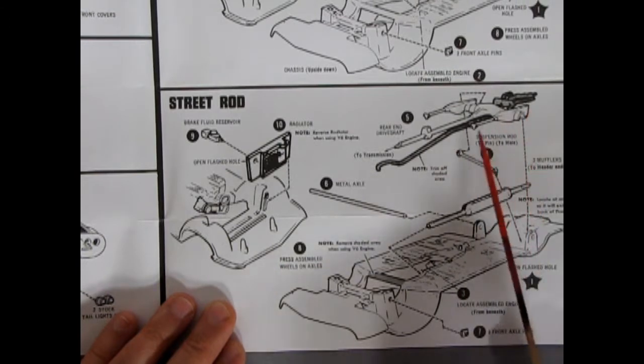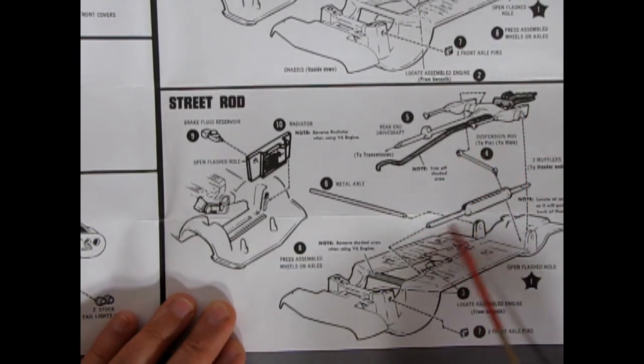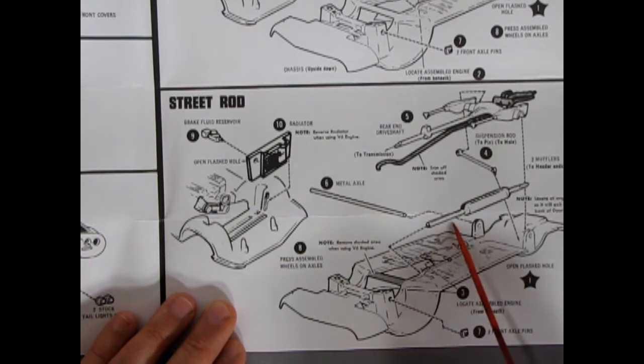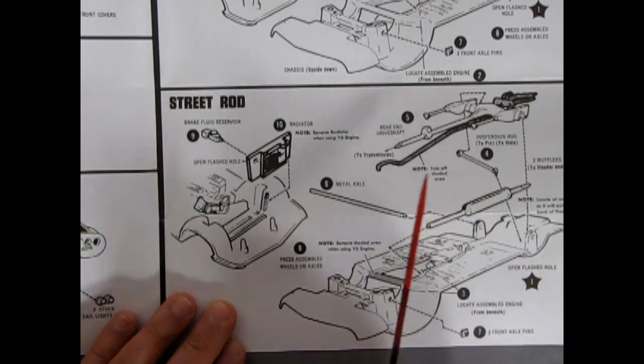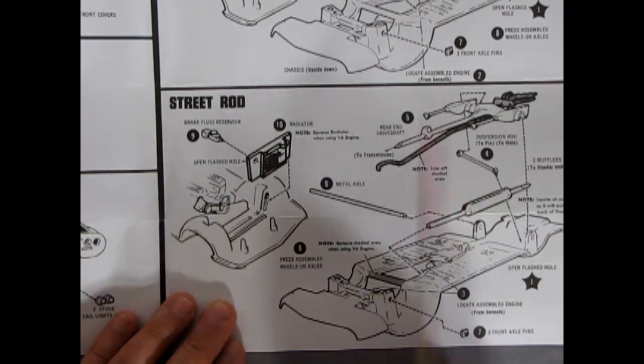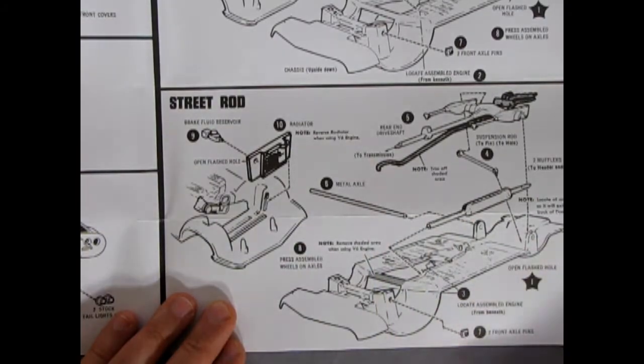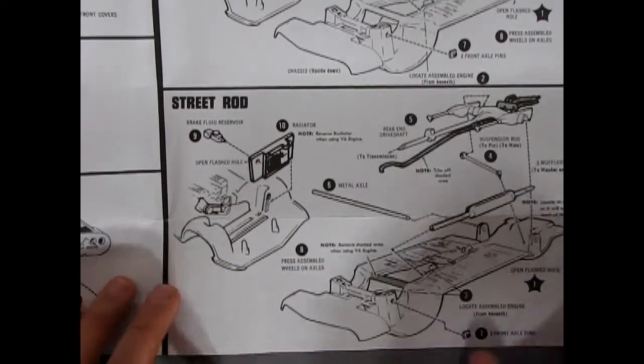You reverse the radiator. You turn it around in there. And then there's the rear end. It's saying to remove that. And then you get this like straight muffler sort of pipe going in there. Looks like a cross brace in there. And then the little front axles will go in there.